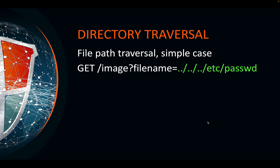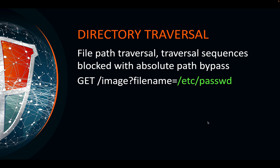Each dot-dot-slash instructs the system to jump back one level in the hierarchy. On a Linux or Windows system, it's the same as 'cd ..' — it changes directory up one level. Normally you don't know where you are in the file system, so if you put like five of those in there, chances are you're coming back to the root directory, then you go into /etc and read the passwd file.